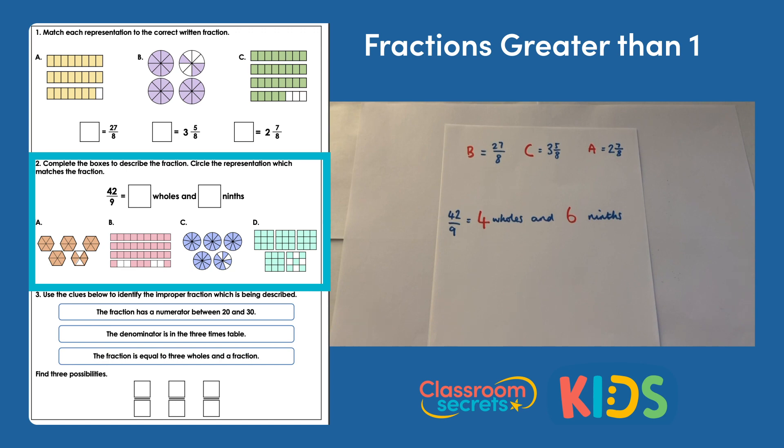If we look back at the representations that you have, we need to choose which representation shows four wholes and six ninths. We can count out A straight away because the fractions represented there are sixths, not ninths. So we need to look at the others carefully to make sure they are all ninths. We're then looking for four wholes, so that will be four of our shapes completely shaded to show the wholes, so that gives me the options of C or D.